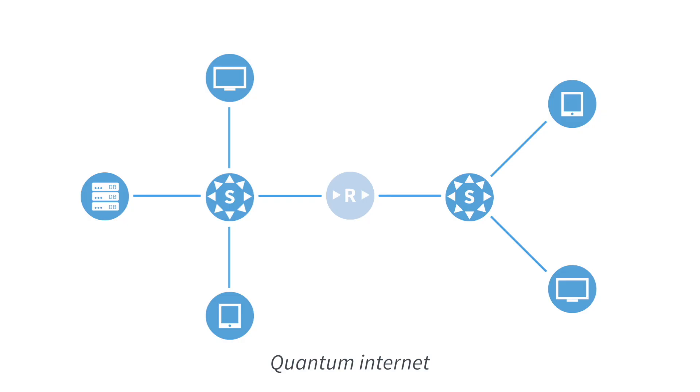Now ideally we would like to send qubits over very long distances, from any point on earth to any other point on earth. In order to achieve this, we will need something that is capable of sending qubits over long distances. This requires a very special form of repeater, called a quantum repeater. A quantum repeater works very differently than a classical repeater, and in a separate video you will learn all about quantum repeaters.